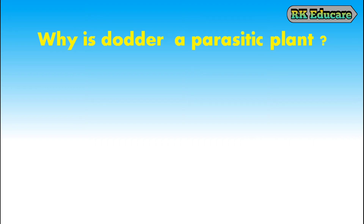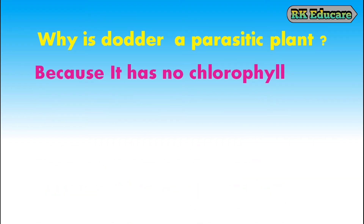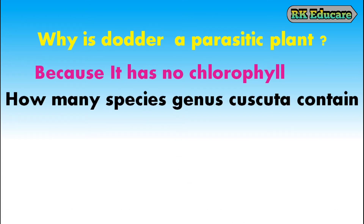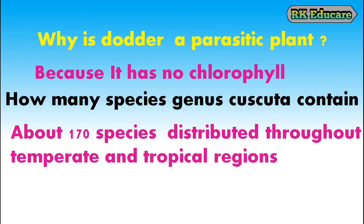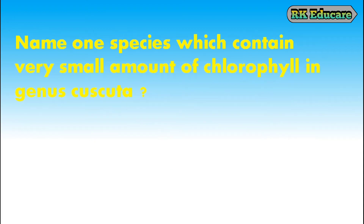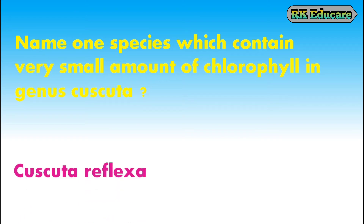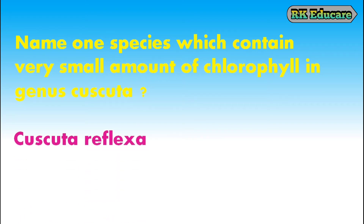Why is Dodder a parasitic plant? Dodder is a parasitic plant because it has no chlorophyll. How many species does genus Cuscuta contain? Genus Cuscuta contains about 170 species distributed throughout temperate and tropical regions. Name one species which contains a very small amount of chlorophyll in genus Cuscuta. In genus Cuscuta, Cuscuta reflexa contains very low amounts of chlorophyll.